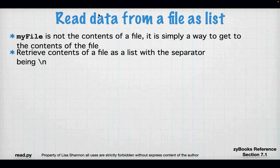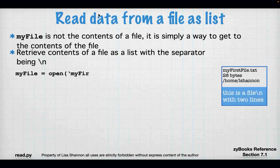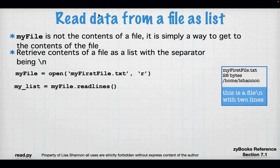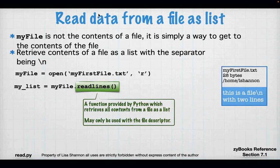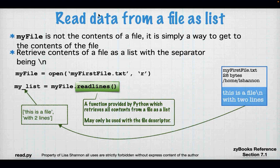Reading data from a file as a list: `my_file` is not the contents of the file. Using `readlines()` reads the contents of the file as a list using the newline as a separator. So instead of `file.read()`, I'm using `file.readlines()`. What this does is retrieve all the contents as a list automatically, using the newline as a separator. You get a list where the first element is 'this is a file' and the second element is 'with two lines'. Notice they are still strings — just two different strings rather than one big string. And please close your file.